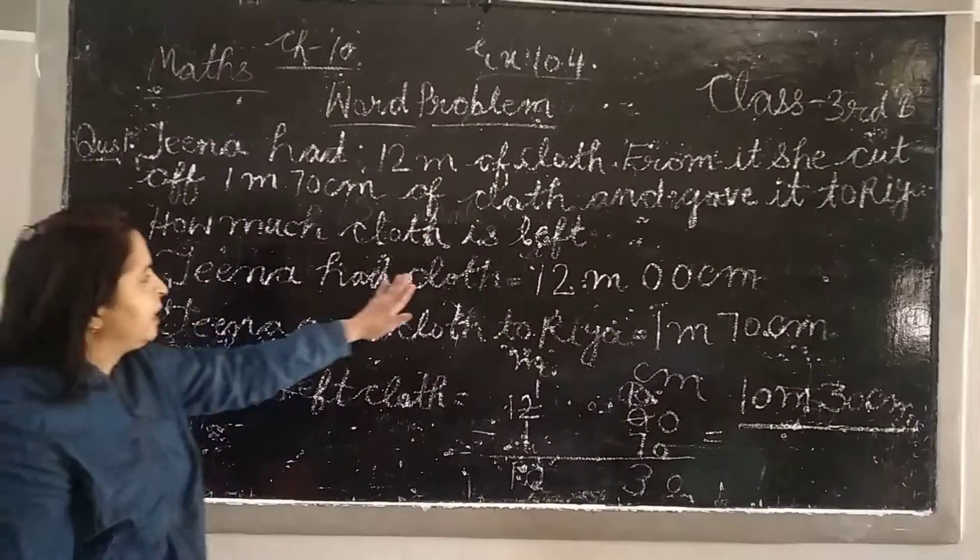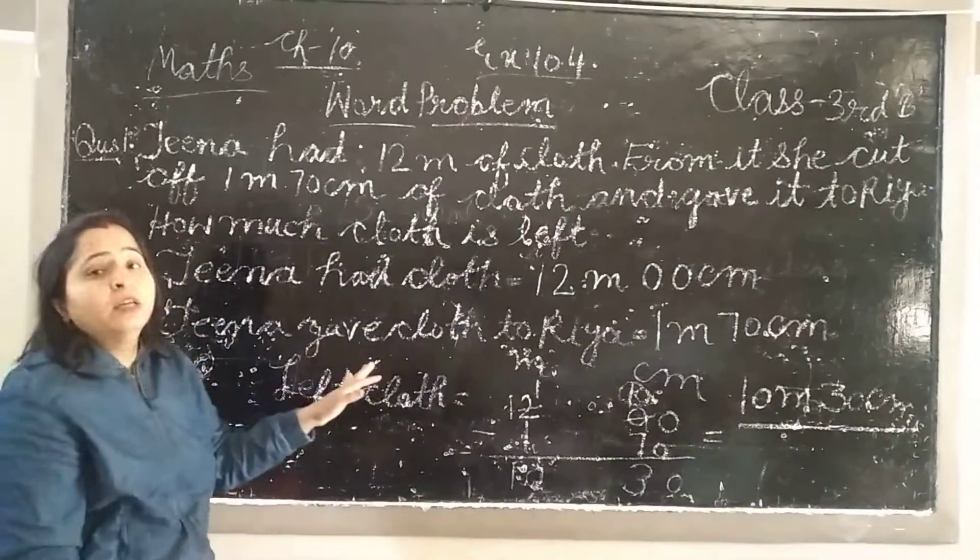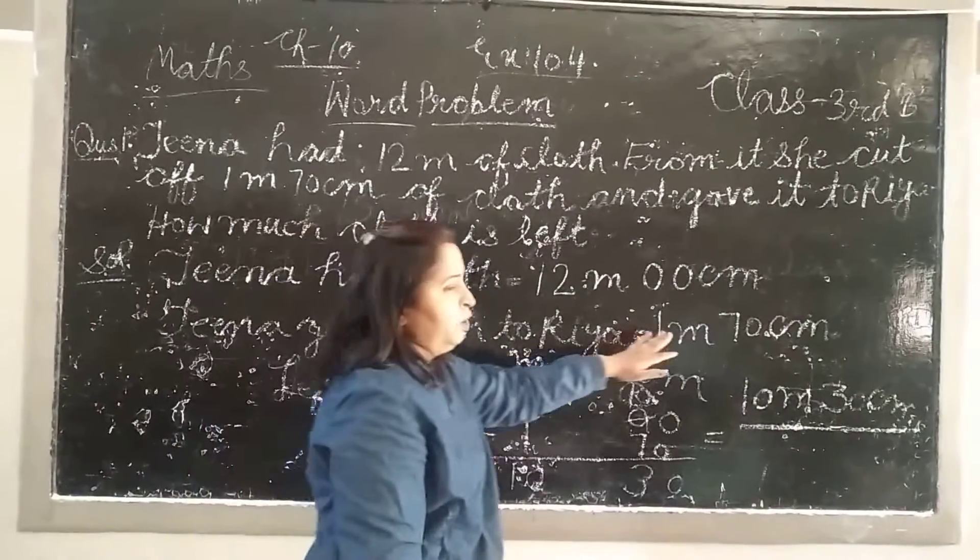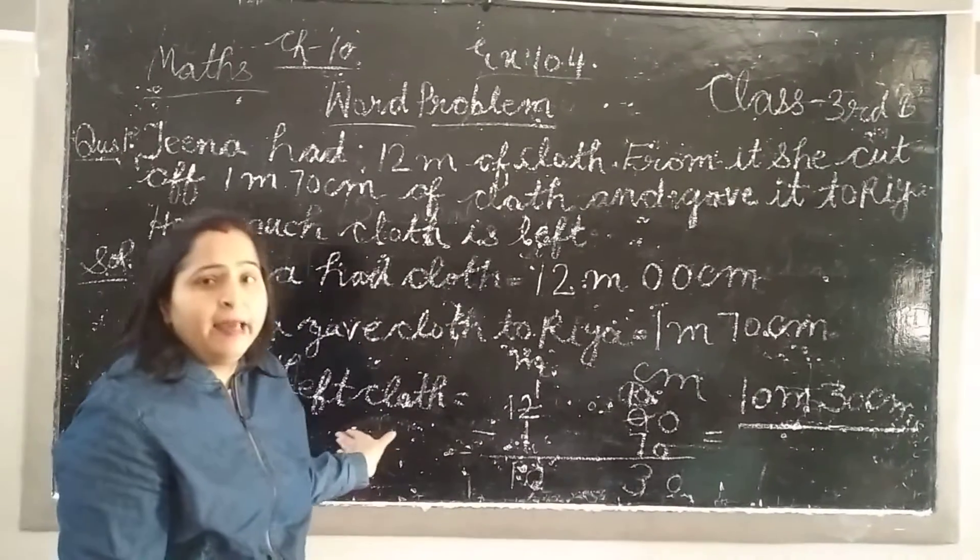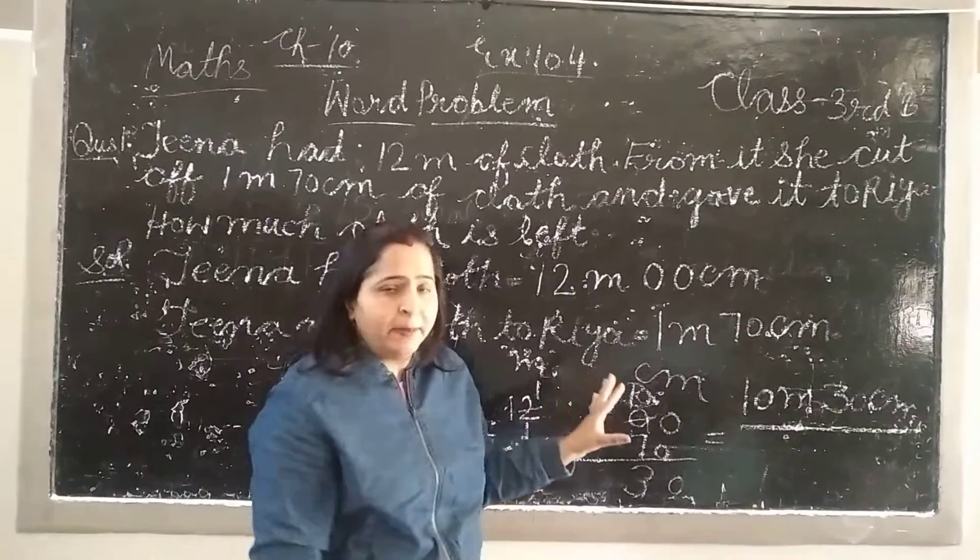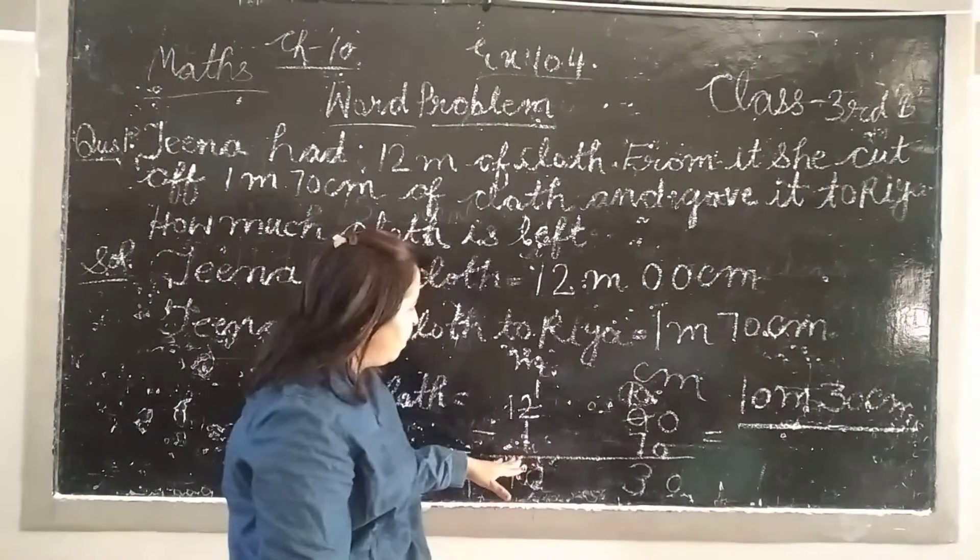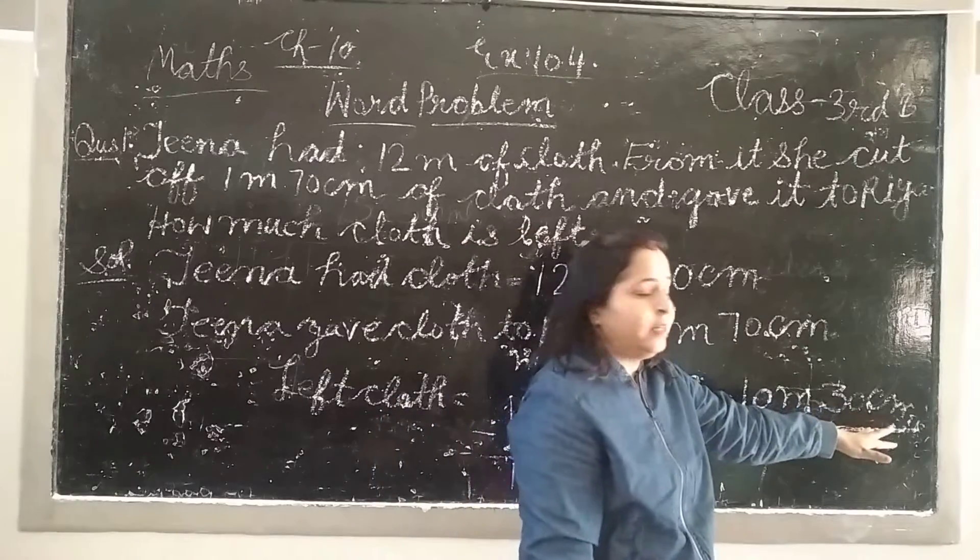It's 3 meters and 30 centimeters left. How much does she have? 3 meters and 30 centimeters. This is 3 meters.